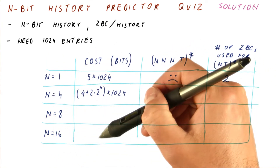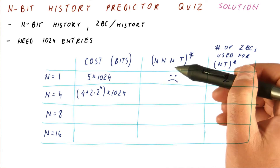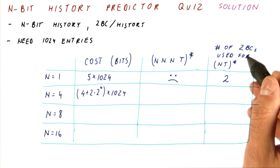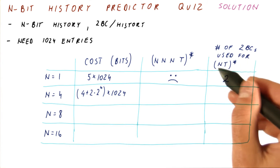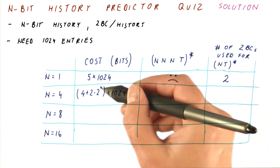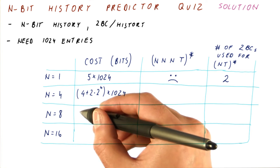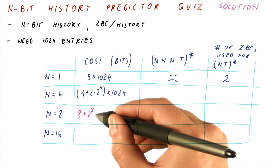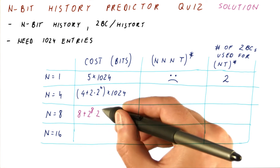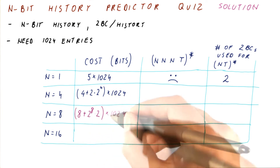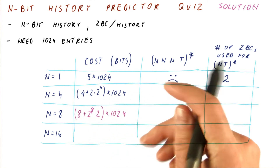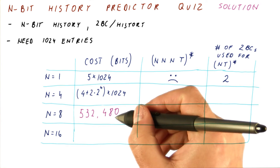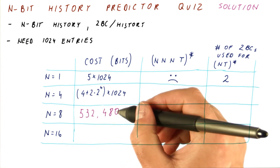Now we want to compute the cost for these predictors. The cost can be computed as simply the size of the history plus we need two-to-the-n two-bit counters for each entry. If you compute what this is, it amounts to 532,480 bits.